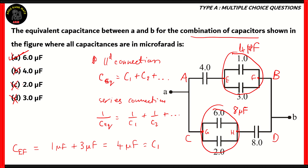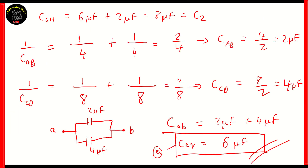Options B and C are incorrect because they do represent equivalent numbers for other connections, but not the entire connection. And 3 does not exist, whether as an equivalent or as a capacitor by itself. So, therefore, option A is the correct option.